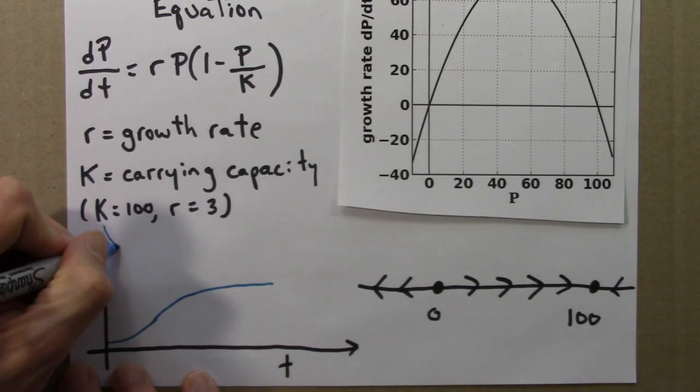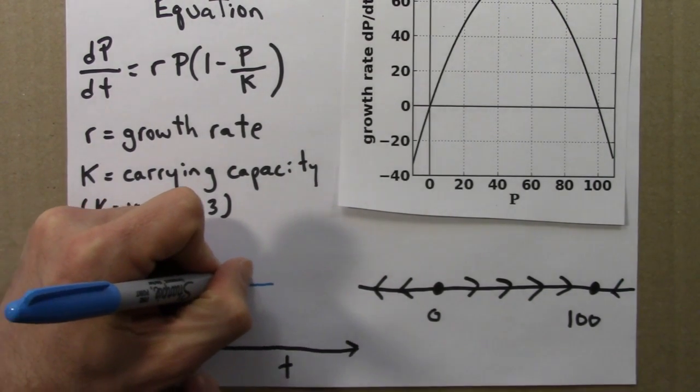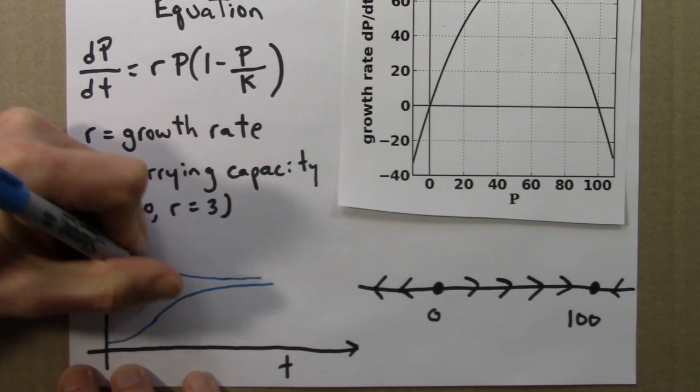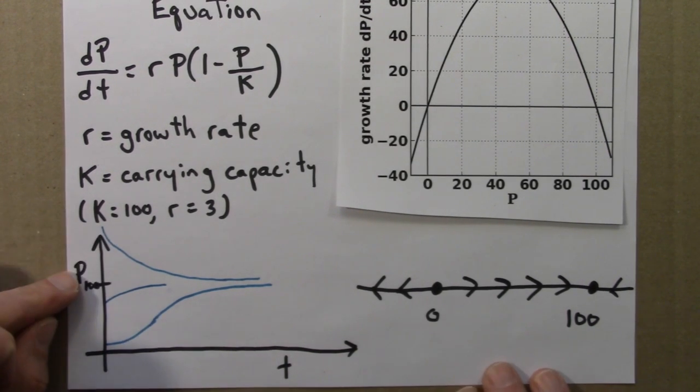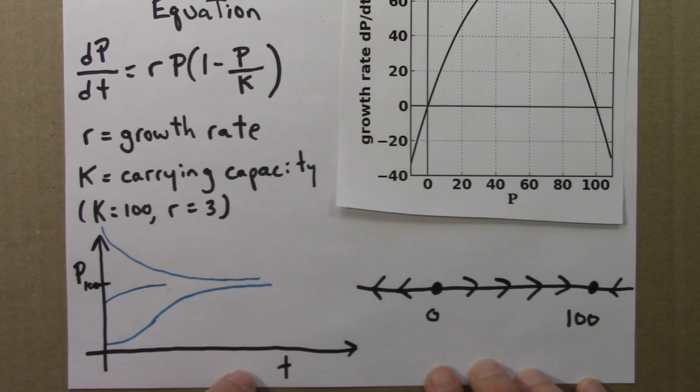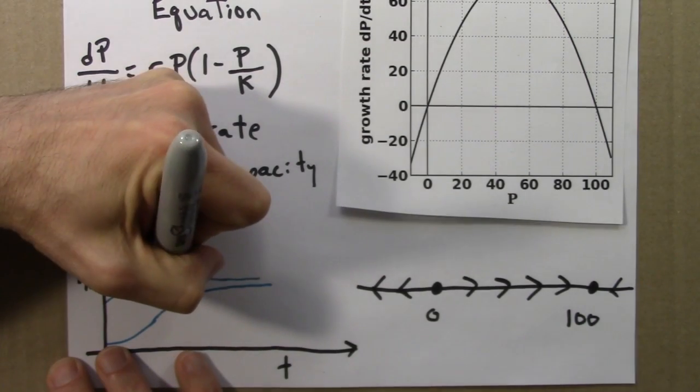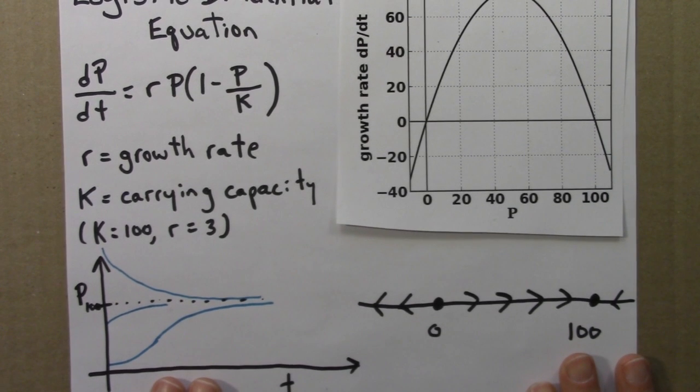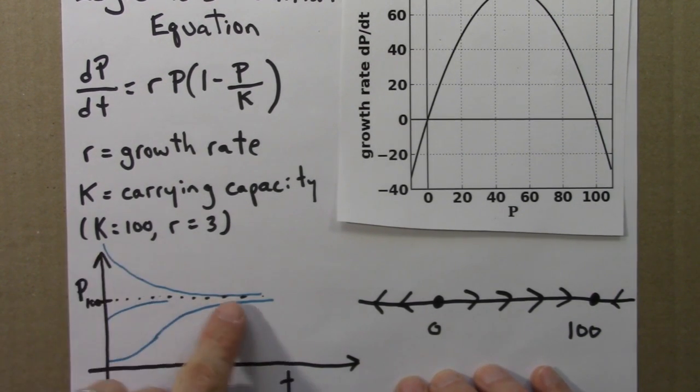If we started above 100, we would decrease and approach 100. So, here are three different solutions. P as a function of time. That's what this blue curve is showing. This is P, this is T. And in all cases, they approach this fixed point at 100. Draw that sort of with a dashed line. So, again, without doing any calculus or using Euler's method, we can get a reliable sense of the shape of these curves.